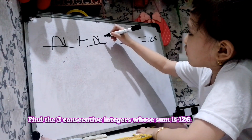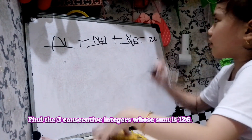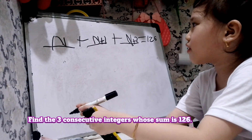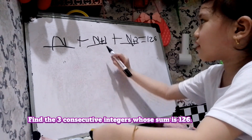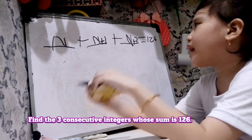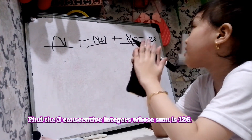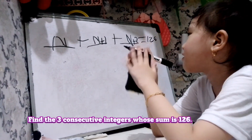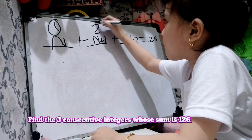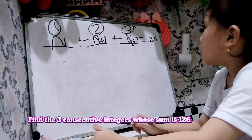Remember, if it's consecutive — or odd consecutive or even consecutive — I just mentioned consecutive numbers. If you have three consecutive numbers, your first is N, your second is N plus 1, and your third is N plus 2. So: N plus (N plus 1) plus (N plus 2) equals 126. This is our first consecutive number, this is our second, and this is our third.